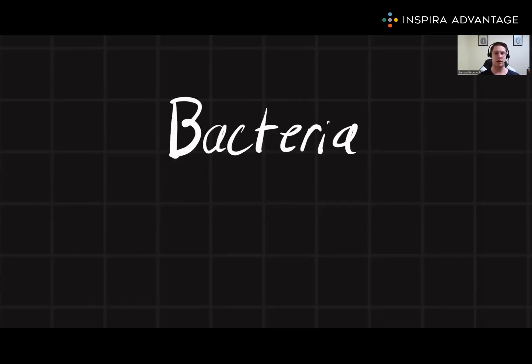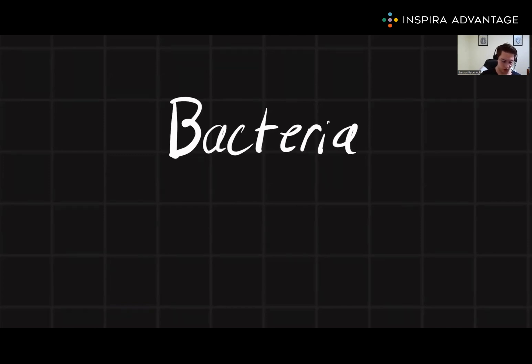Let's start with the three different shapes of bacteria you need to know for the MCAT. The first is bacilli, which just means rod.